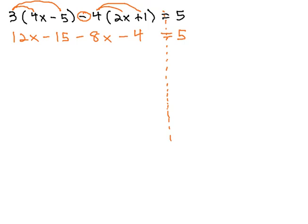After distributing, the next thing I always look for is can I combine like terms? Sure enough, 12x minus 8x is 4x, and negative 15 and negative 4 is negative 19, which is equal to 5. So all we've done so far is cleaned up the left side of the equation as much as we can.